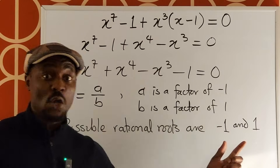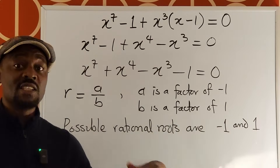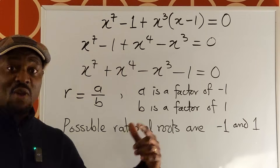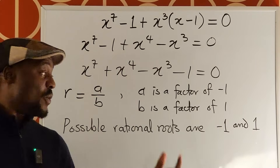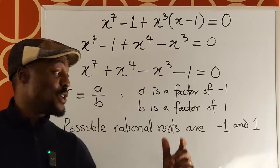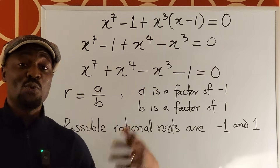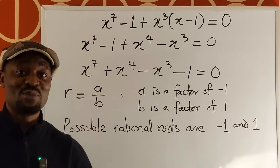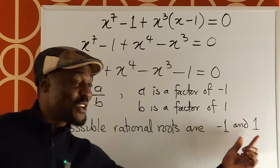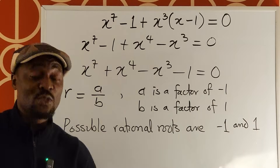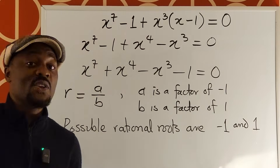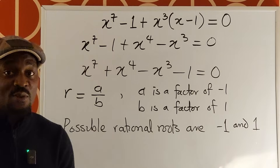These are possible roots — we don't yet know if negative one or one is actually a root. We don't know the multiplicity of these numbers; they might occur once, twice, or more. We don't even know if they are roots yet. We have to figure out whether they're roots or not.